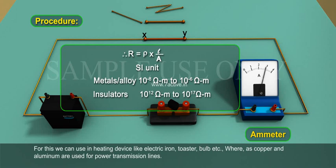Whereas, copper and aluminum are used for power transmission lines.